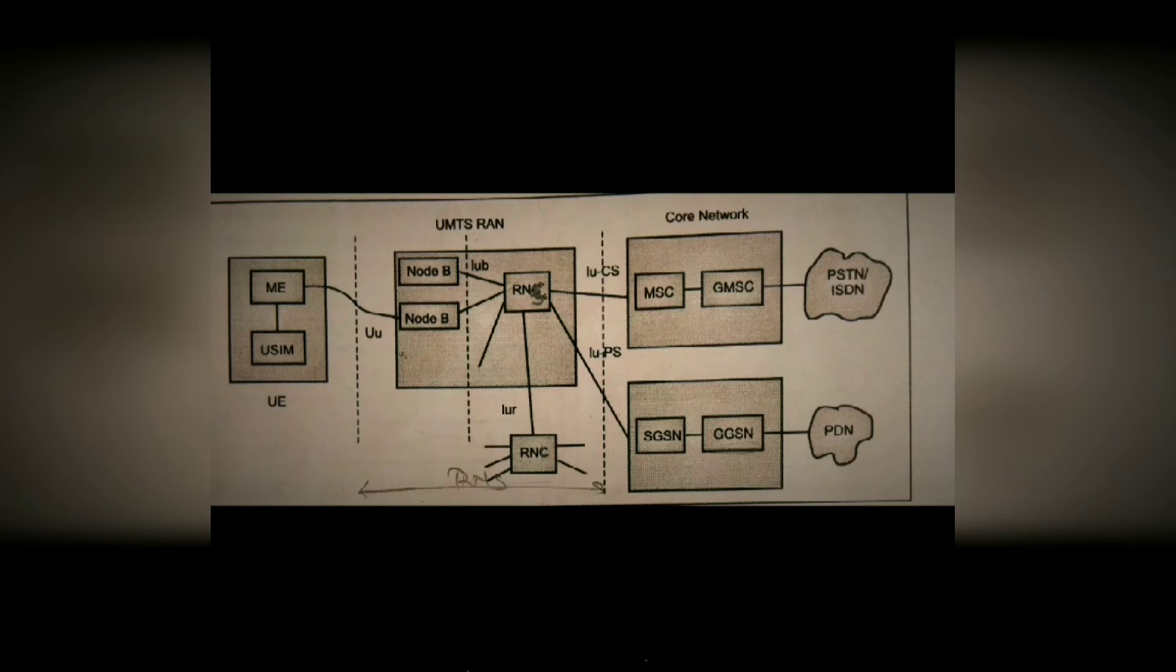The radio network controller, in GSM is BSC, that is base station controller, and the RNC is radio network controller, the UMTS is radio network controller. The radio network controller controls a number of nodes. In the GSM, you can see that the number of BTS is connected to the BSC. The same thing is that the number of nodes are connected to the RNC.